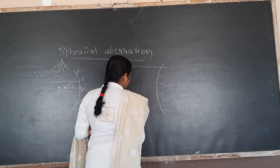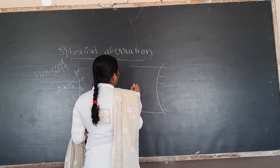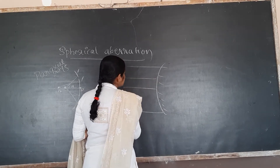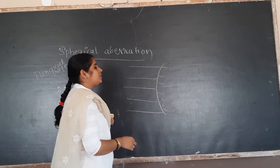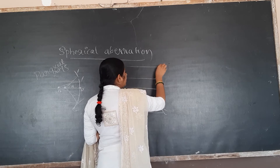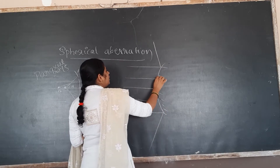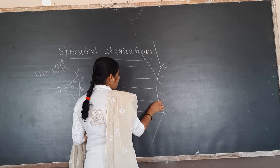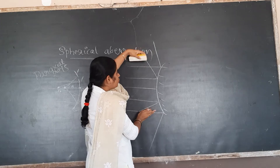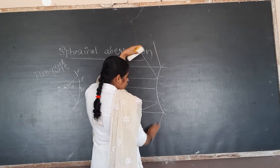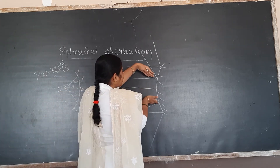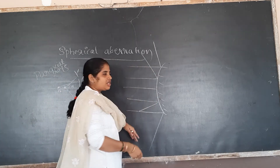So this is the marginal ray, and this is near to the principal axis — the paraxial rays. For the convex mirror, the light ray will diverge. The light rays which are marginal, at the edge, will diverge more. And the light rays near to the principal axis — the paraxial rays — will diverge less.